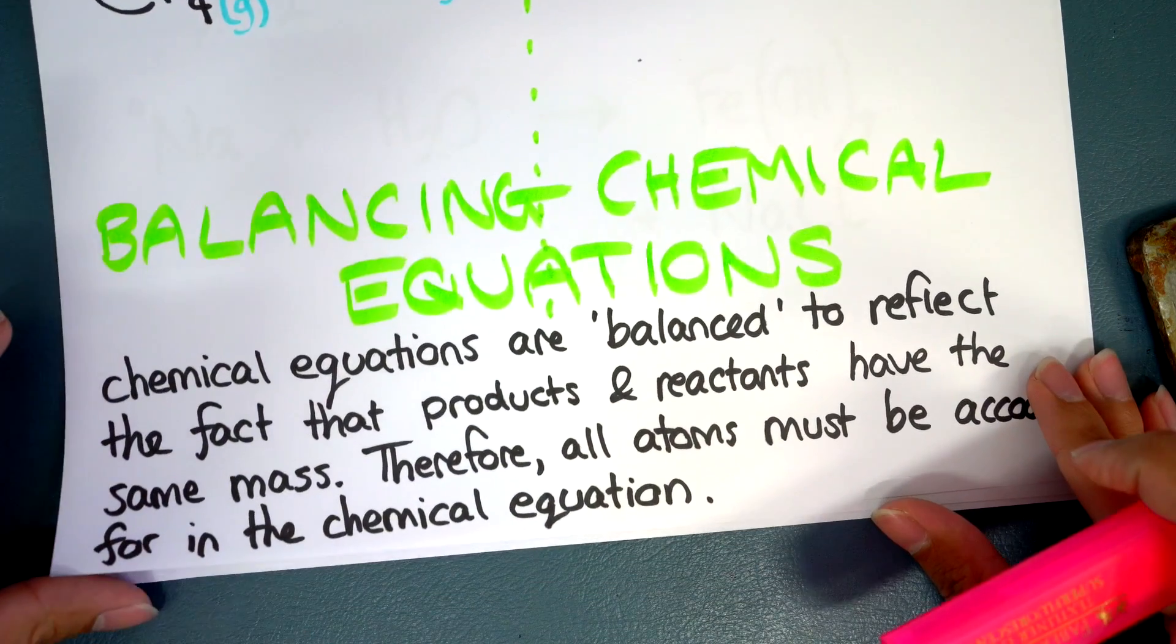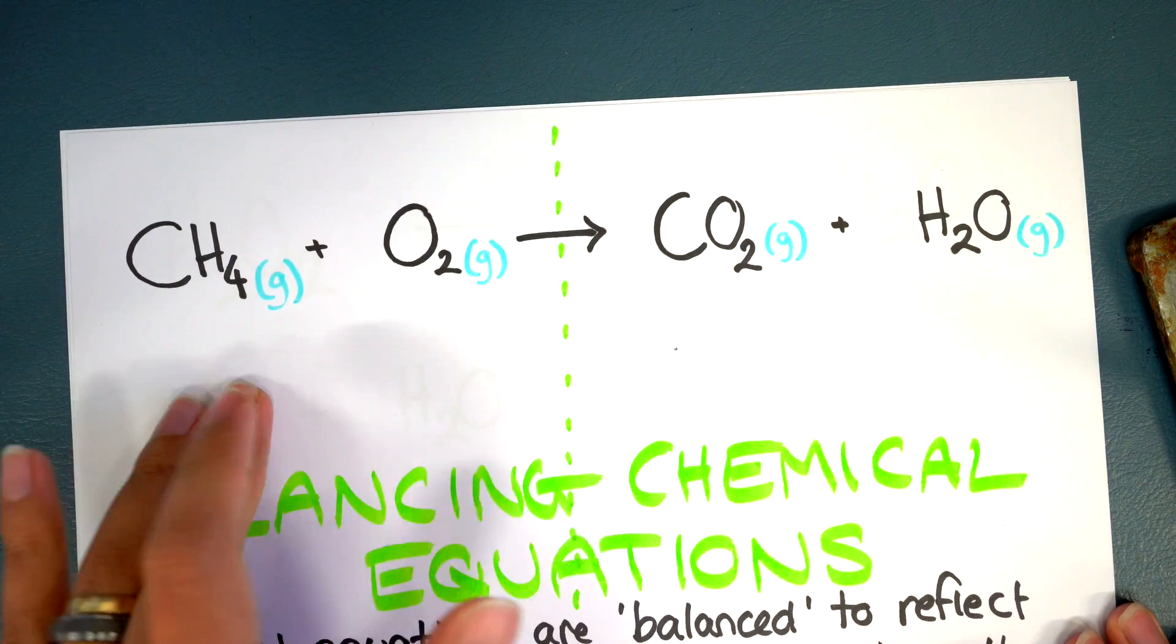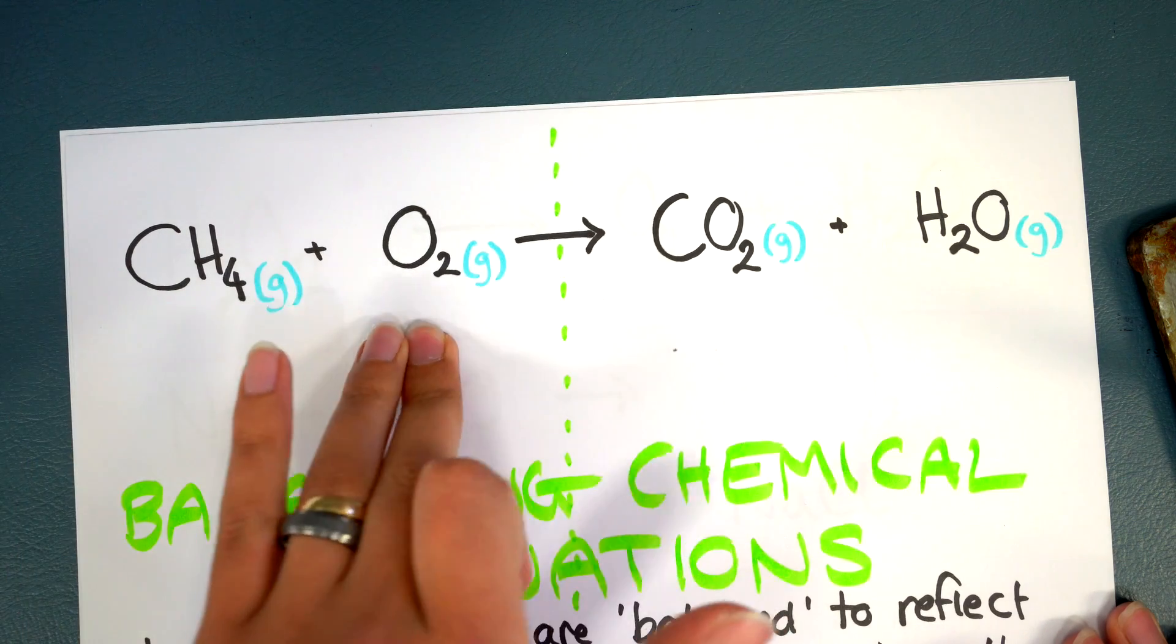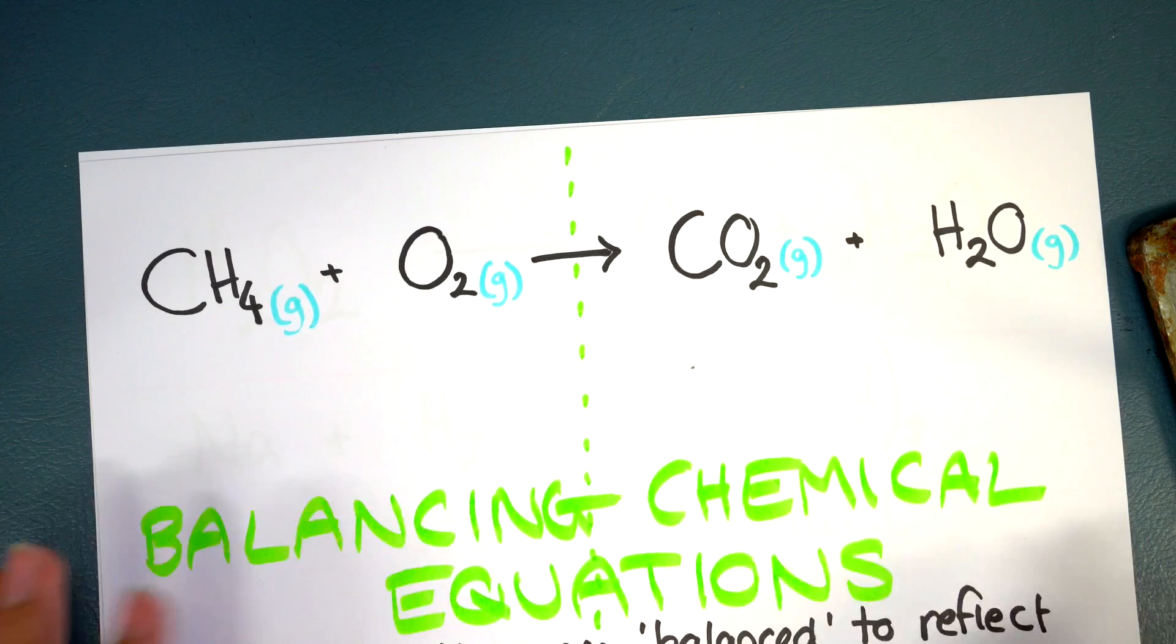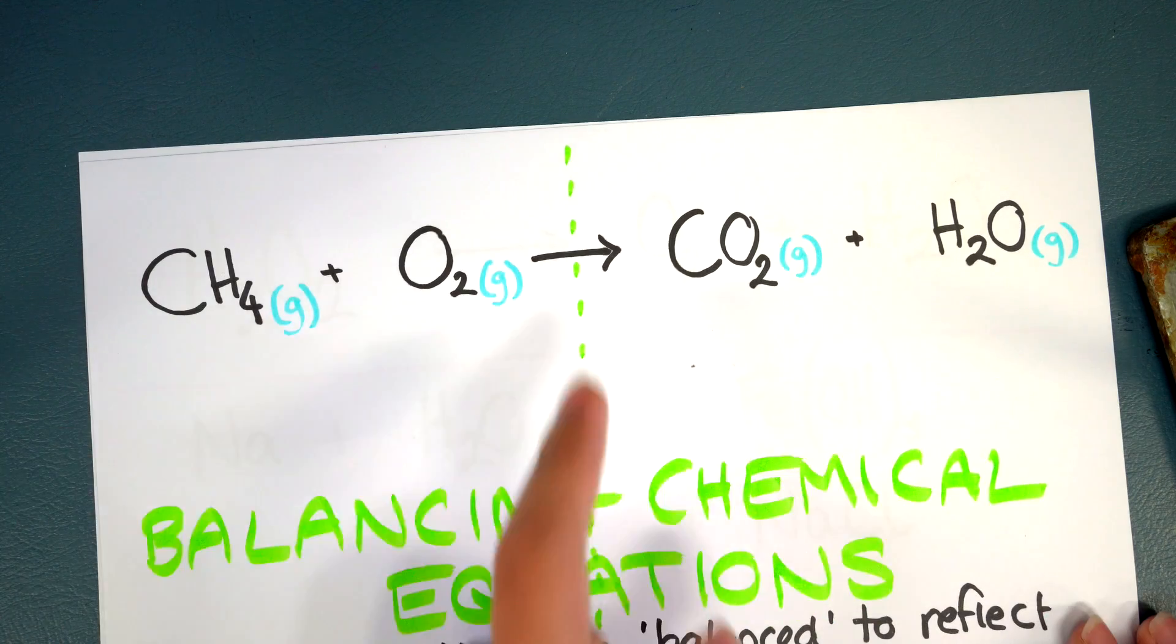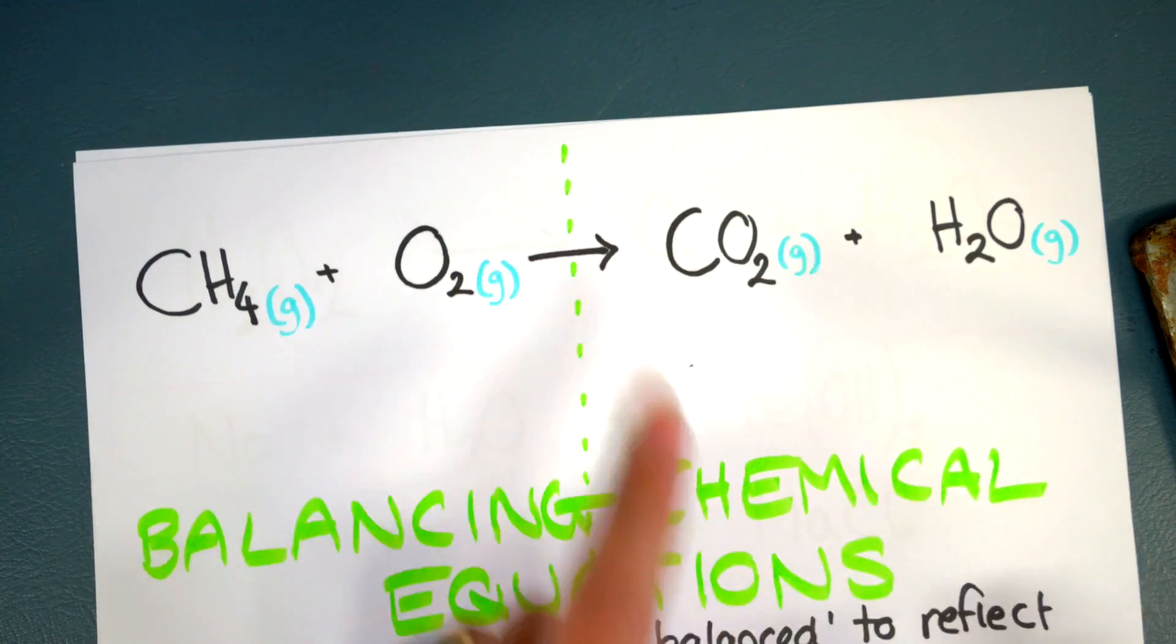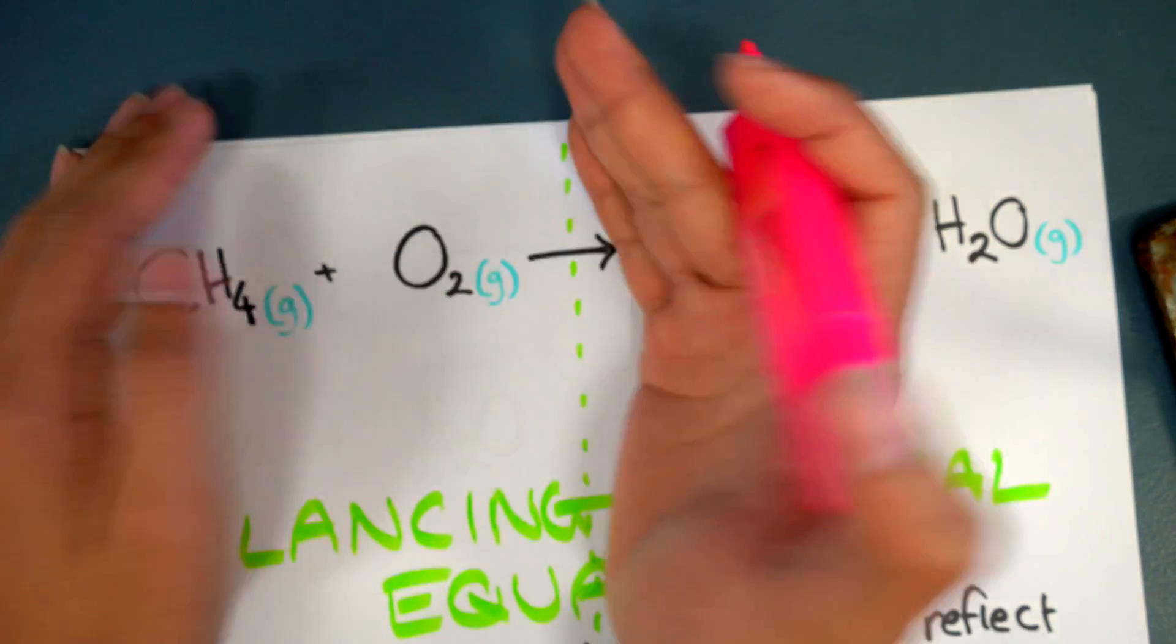Let's get started with our balancing process. I'm going to do the first example here. I've got the combustion reaction between methane and oxygen to create carbon dioxide and water. Here we're going to make sure that all of the atoms are accounted for on the left and the right hand side. To help you as a viewer to get a visual, I've drawn a dashed line right through the middle of the arrow sign so you can see this side which is my reactants and this side here which is the products.